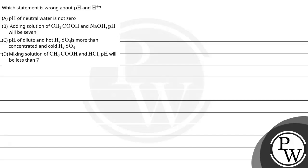The question asks which statement is wrong about pH and H+. Option A is pH of neutral water is not zero. Option B is adding solution of CH3COOH and NaOH, pH will be 7.